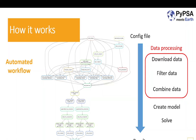We have a configuration file where we can set the basic requirements for the model — for example, CO2 limits, which technologies to enable, or which countries to look at. Starting from this config file, which is easy to use, the automated workflow is triggered. We can separate it into a very big data processing task — downloading, filtering, cleaning, and combining data — and once that is done, we create the model using the PyPSA framework, solve the model, and get results for robust scenario planning.